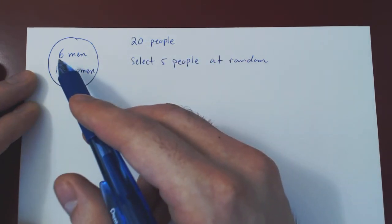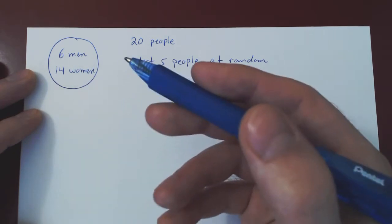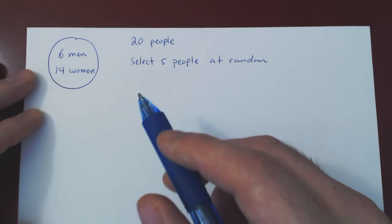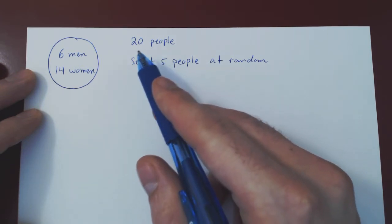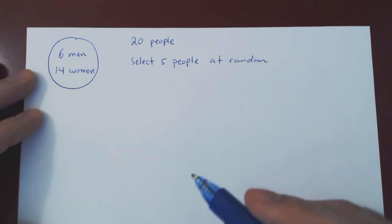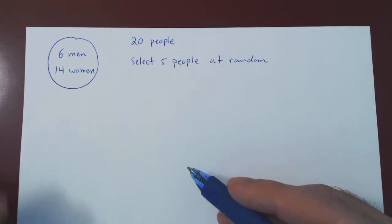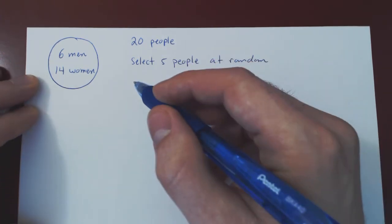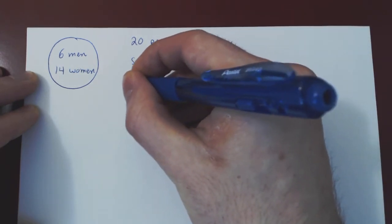So, a group of 20 workers: six men, 14 women. A committee is to be formed, and to be fair, the committee is formed at random — a committee of five people. The five people are selected at random. Just to get a feeling for why this is not a trivial counting problem, let's ask simply: how many possible committees can be formed? What is the total number of possible committees?